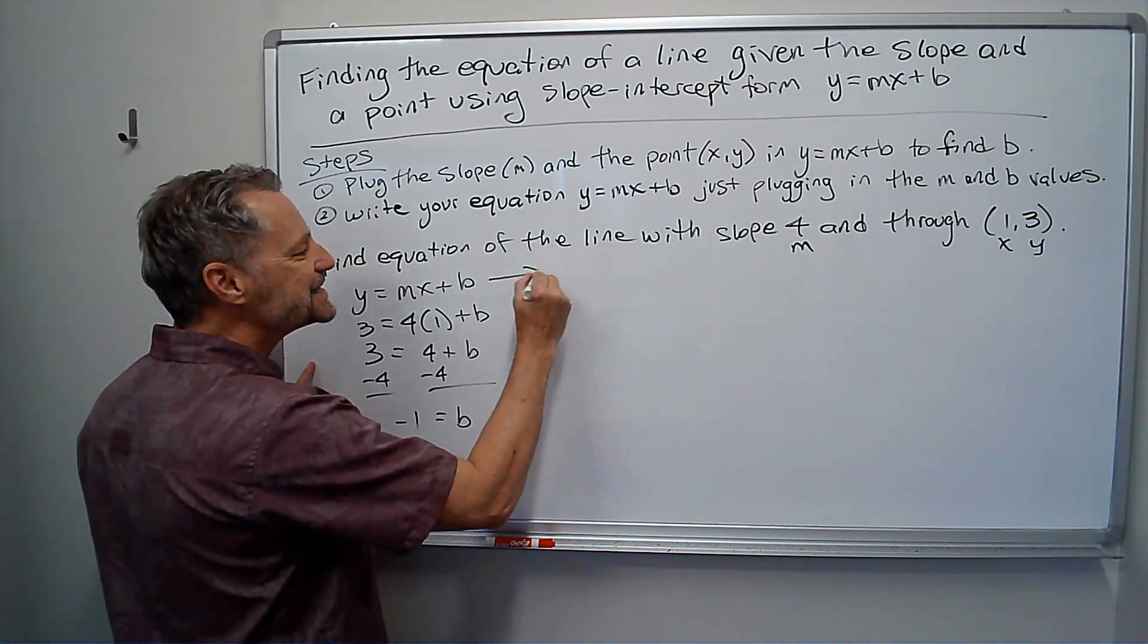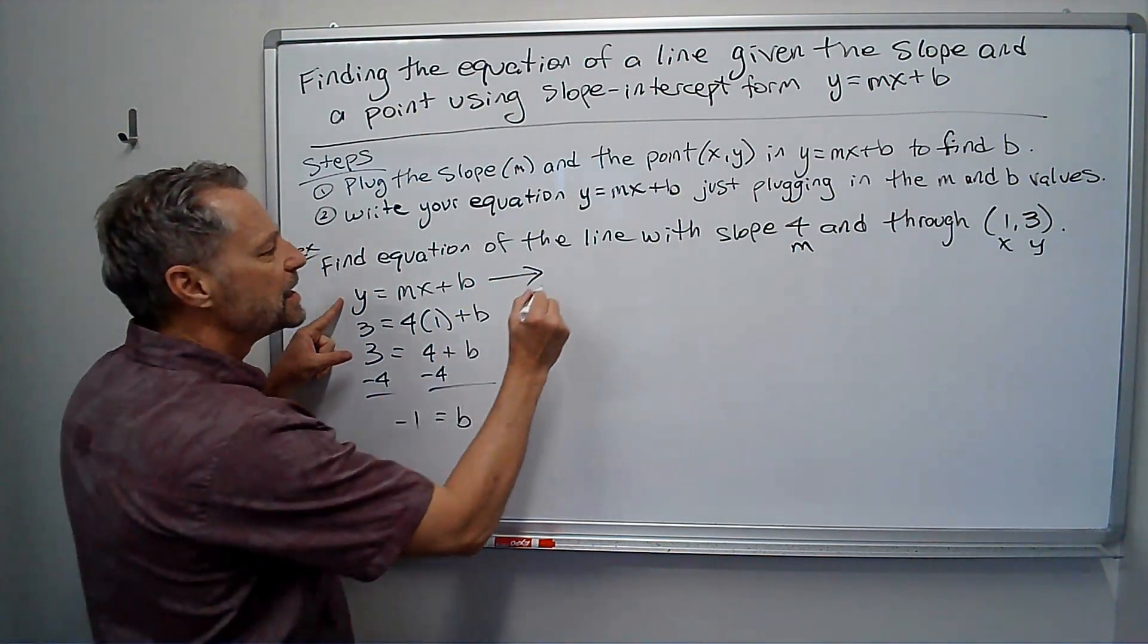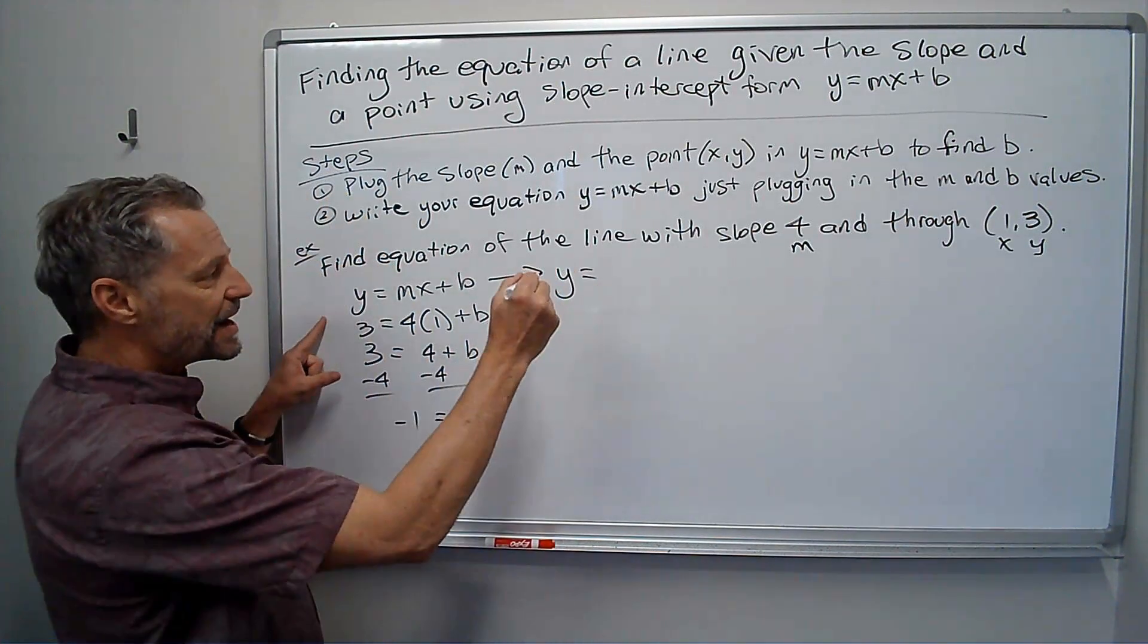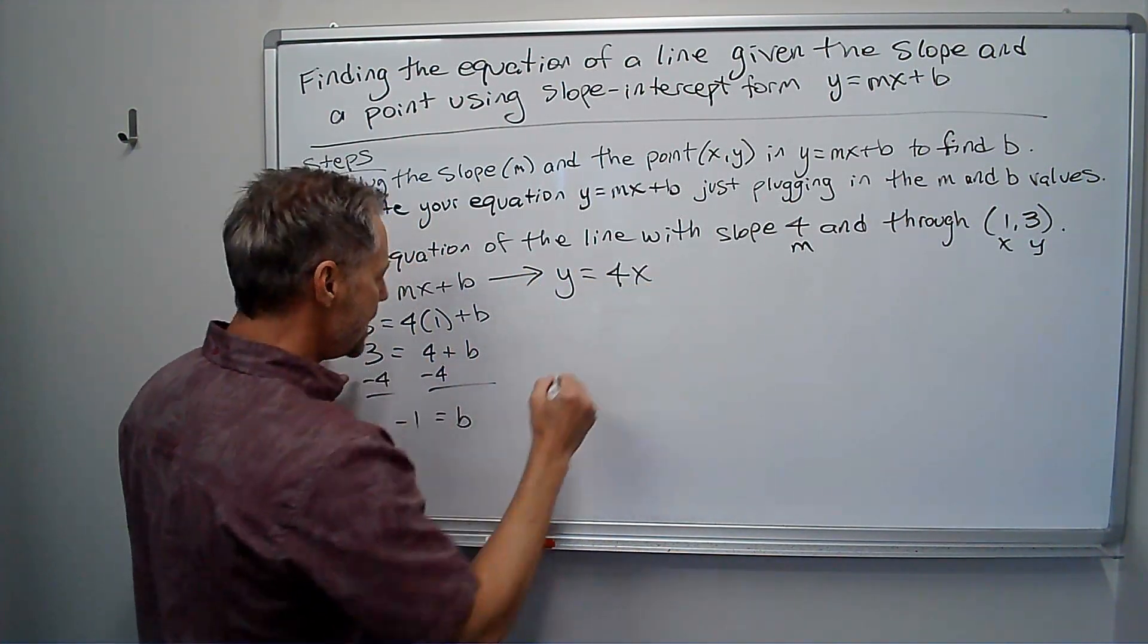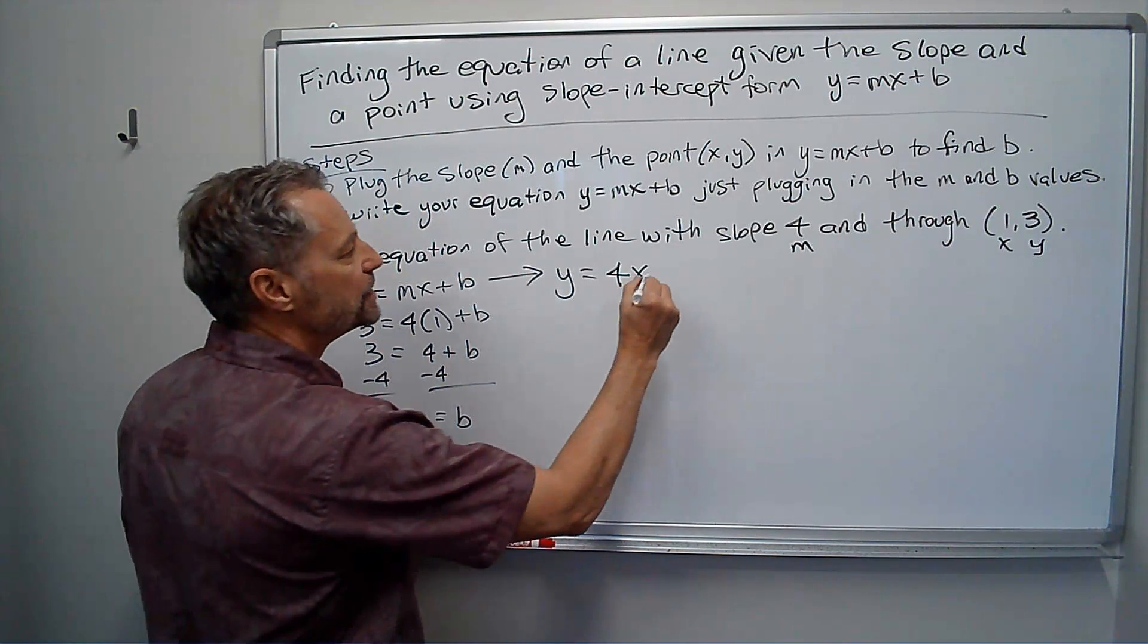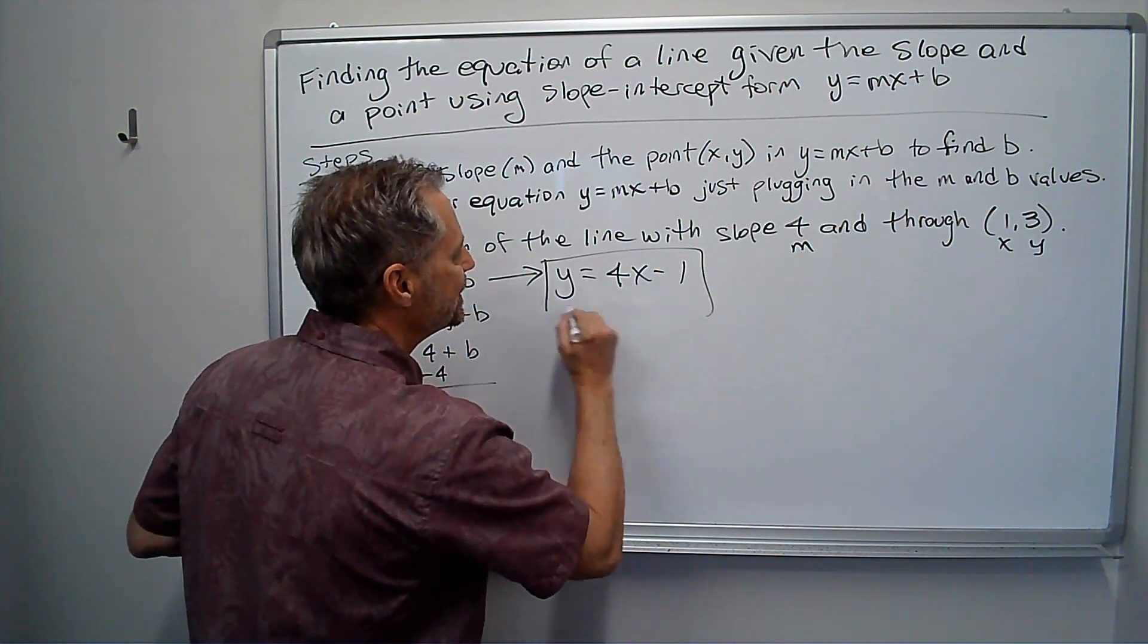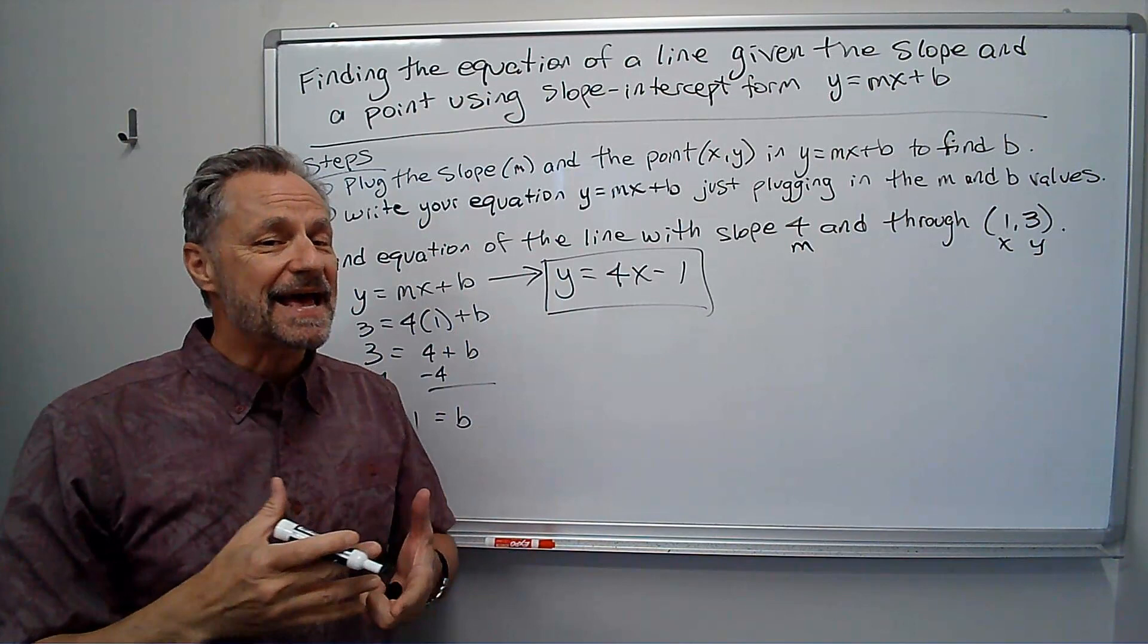So I just go back to this, y equals mx plus b, and I go y equals, my m was 4, so it's 4x, and b is negative 1, 4x minus 1. That's my equation. Simple as that.